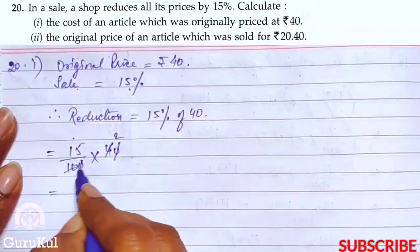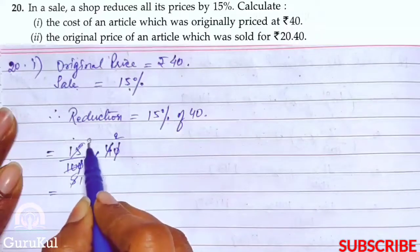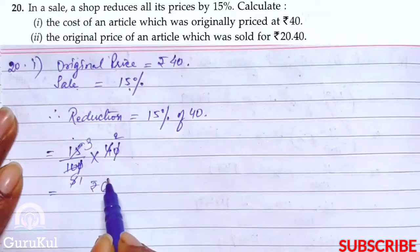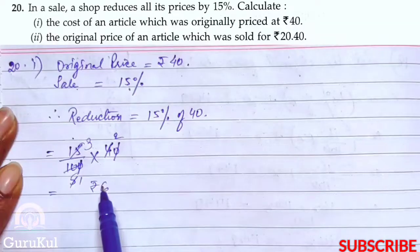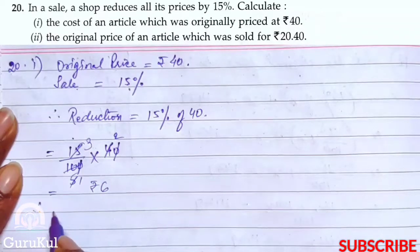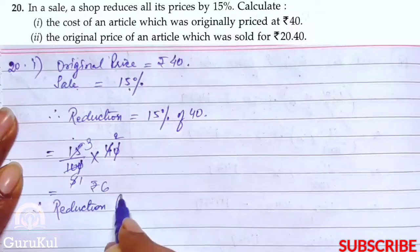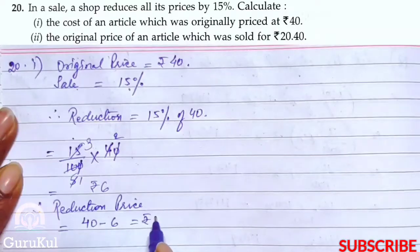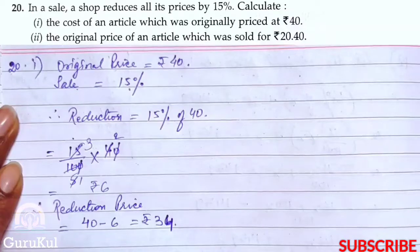Calculating: 15 by 100 times 40. This gives Rs. 6. This is the amount reduced from the original for the sale. Therefore, reduction price is equal to 40 minus 6 is equal to 34. So the first part is complete.